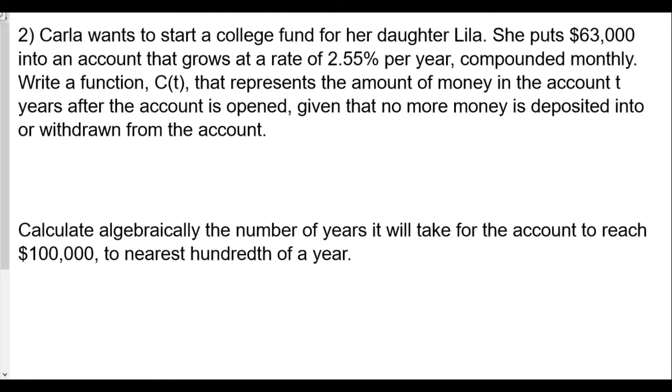The formula is going to be C(t) equals A sub zero initial value times one plus r over n raised to the nt power. We know to use this formula because it's compounded monthly. If we're compounded continuously we'd use a formula for e, but this one's compounded monthly where n is the number of times compounded per year.